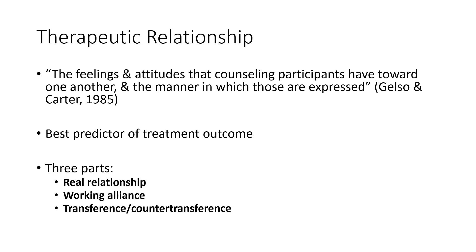There are three parts of the relationship. Those three parts are the real relationship, the working alliance, and transference and countertransference. I want to spend some time and talk about each of these three parts in particular because they're absolutely critical to the whole vehicle that is therapy and counseling. The real relationship is the genuine, non-distorted connection between helper and the client.